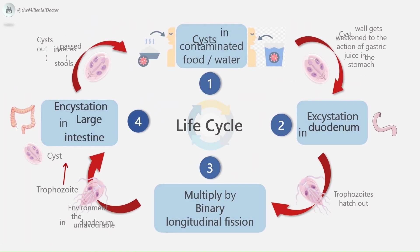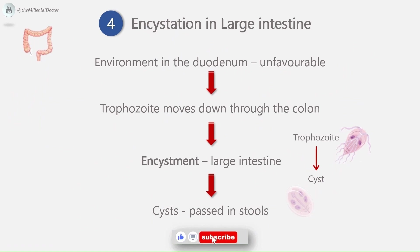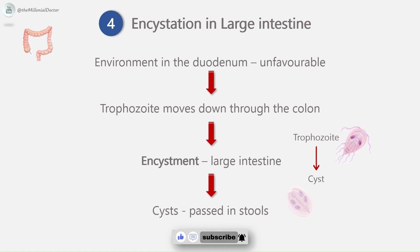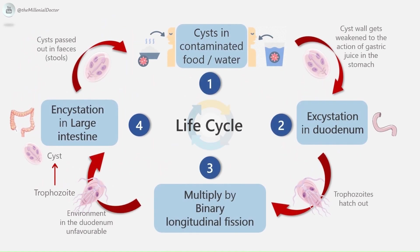The final stage is encystation in the large intestine. When the environment in the duodenum becomes unfavorable, the trophozoite moves down through the colon and encystation occurs, usually in the large intestine. During encystation, the trophozoite retracts its flagella into the axonemes, which remain as curved bristles in the cyst. The cytoplasm is condensed and the cyst wall is secreted. As the cyst matures, the internal structures are doubled. Cysts passed through stools remain viable in soil and water for several weeks; as many as 200,000 cysts may be present in 1 gram of feces. Trophozoites passed in stool die outside and are not infectious.